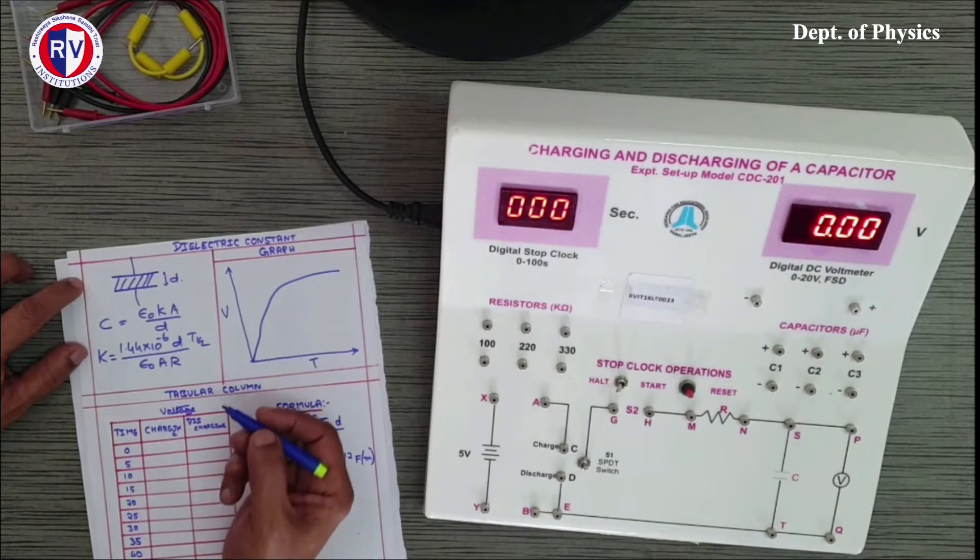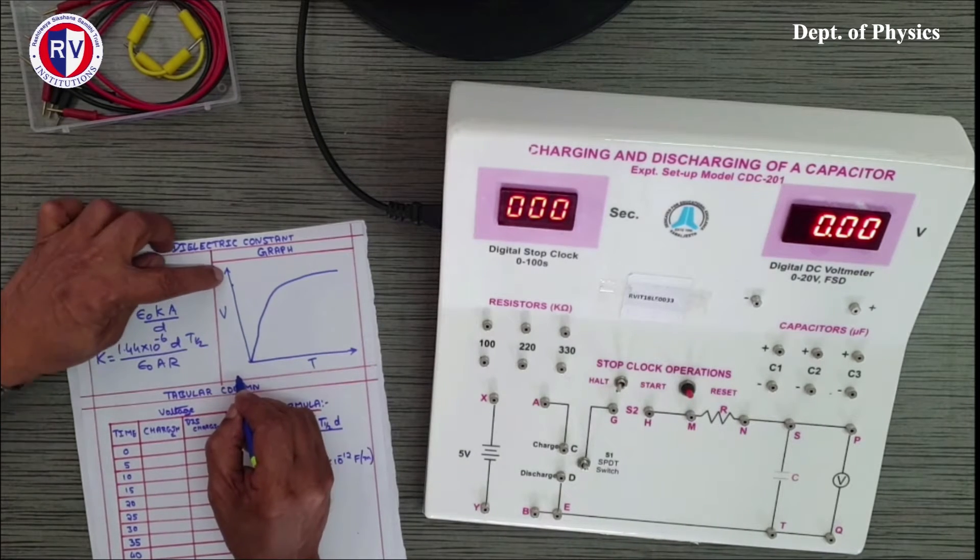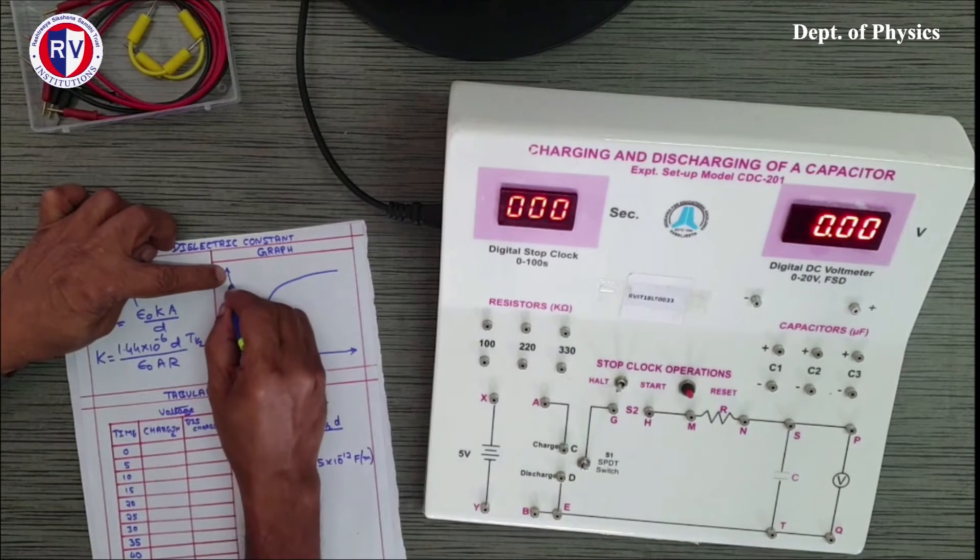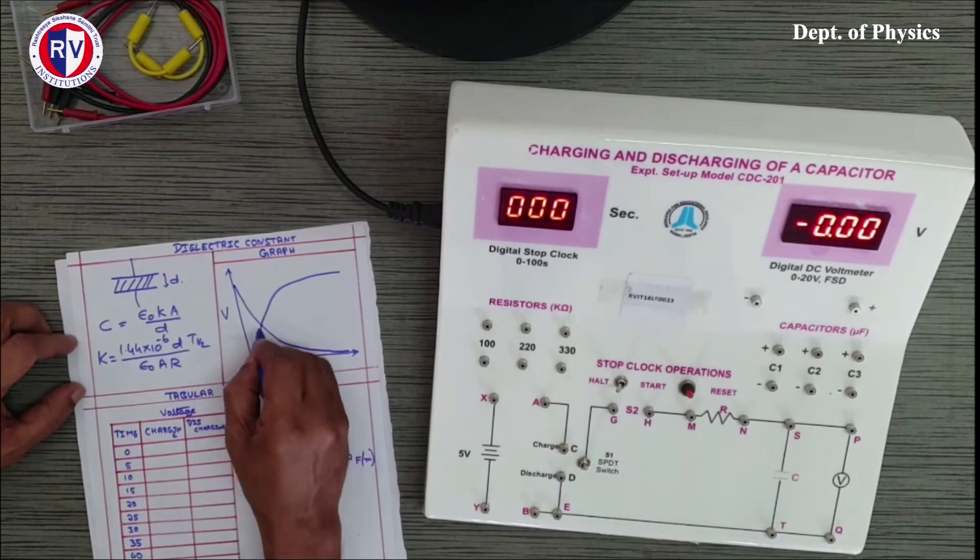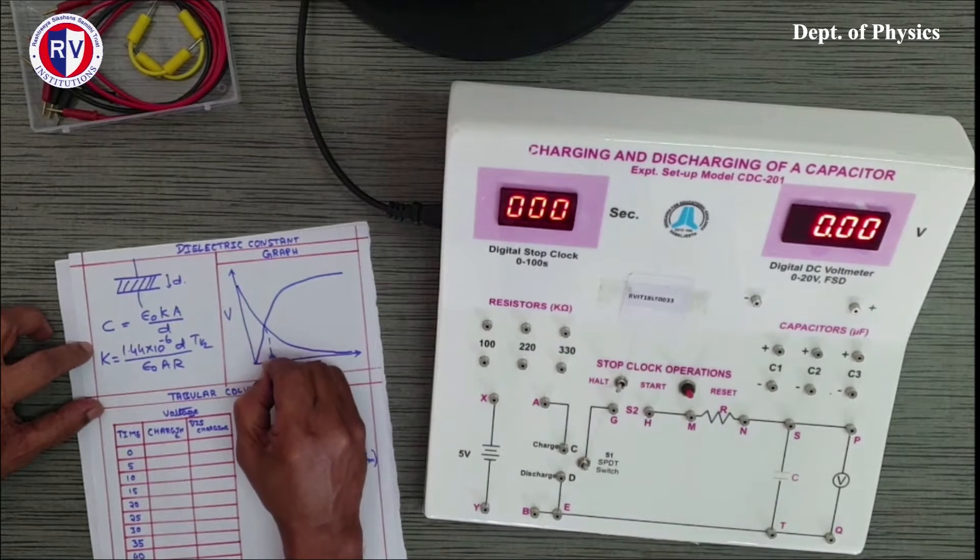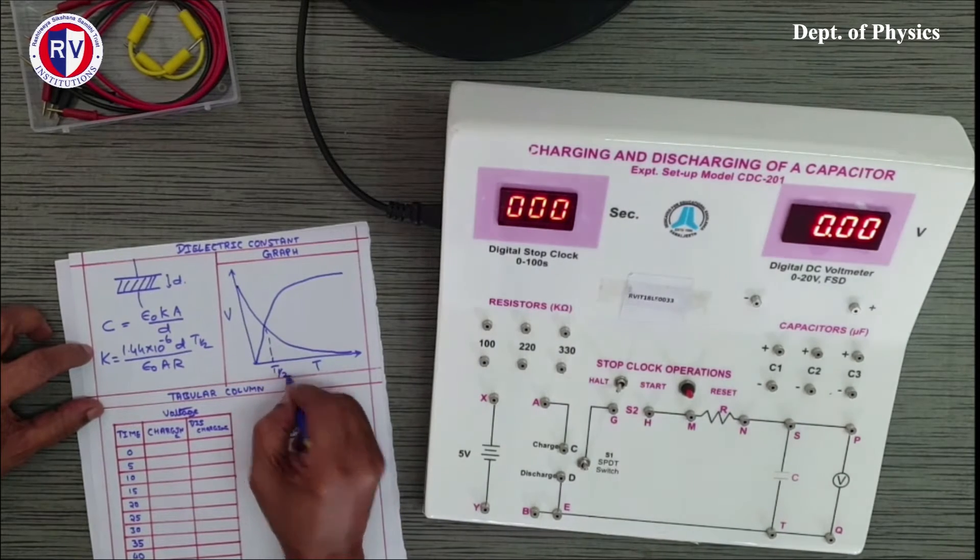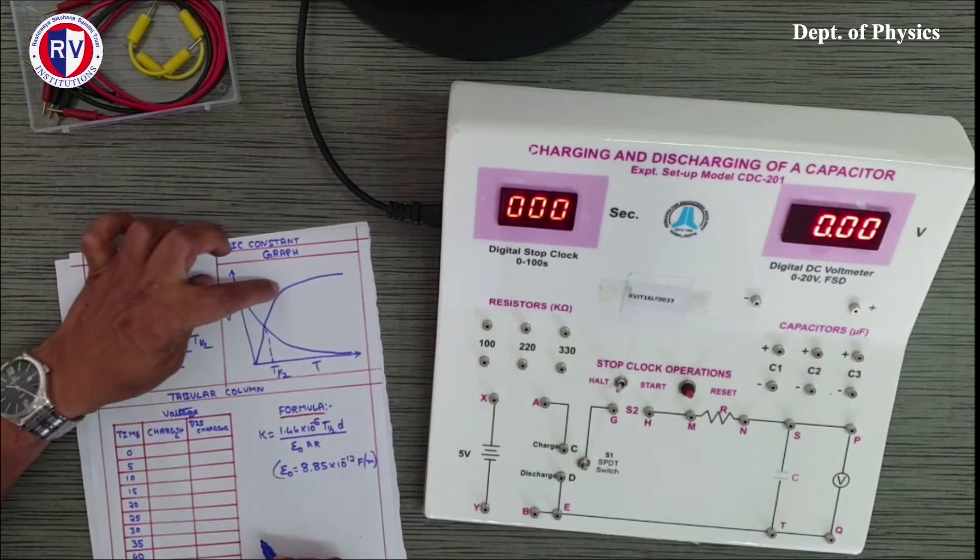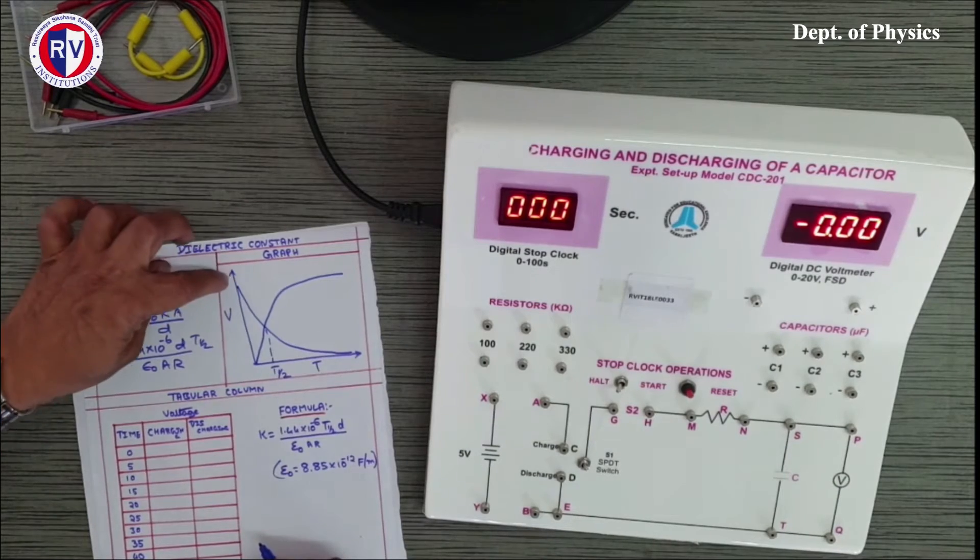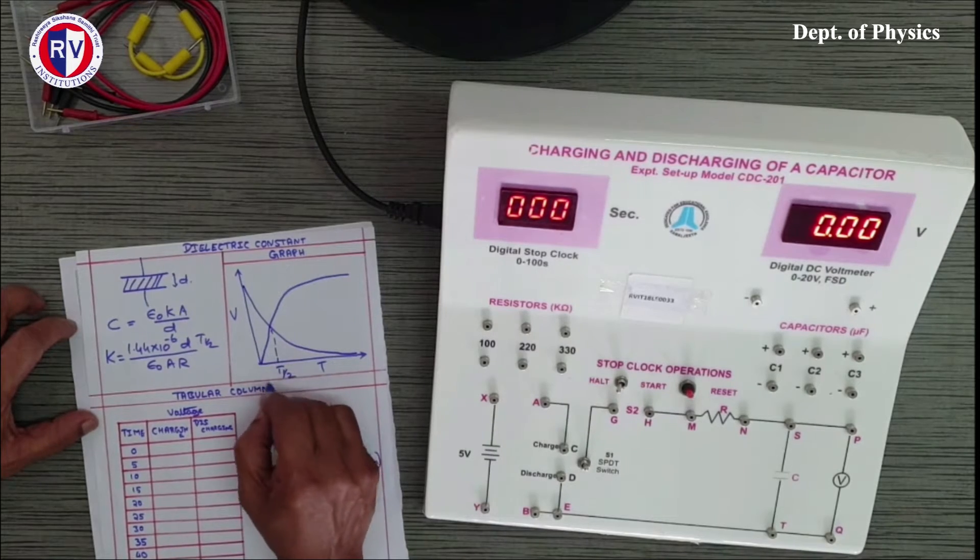If you allow the capacitor to discharge from its maximum value, starting with the highest voltage, it will exponentially decrease down to zero. These two graphs intersect at this point and the time corresponding to this intersecting point is called t_half. In fact, it represents the time required to charge 50 percentage of the maximum voltage or discharge to 50 percentage of the maximum voltage. Using the experiment, we are going to find out what is t_half.